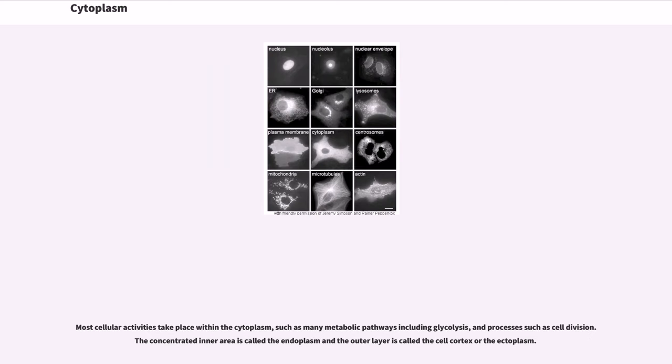Most cellular activities take place within the cytoplasm, such as many metabolic pathways including glycolysis, and processes such as cell division. The concentrated inner area is called the endoplasm and the outer layer is called the cell cortex or the ectoplasm.